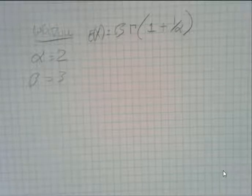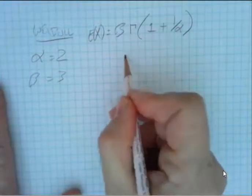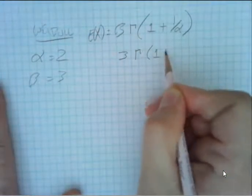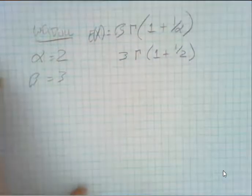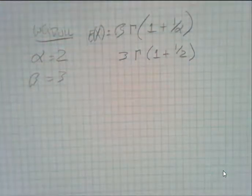And then without solving any arithmetic, go ahead and fill in the values you've got. So I know my beta is going to be 3 times the gamma function of 1 plus 1 over alpha, which is 2. So I just take that very neutral step of writing out what's going on here.